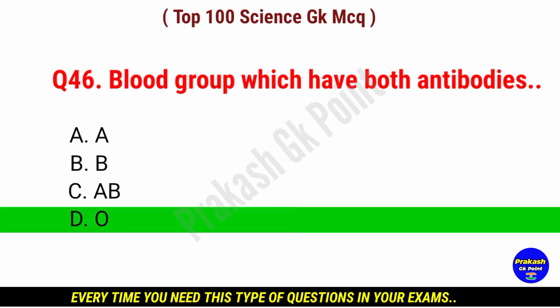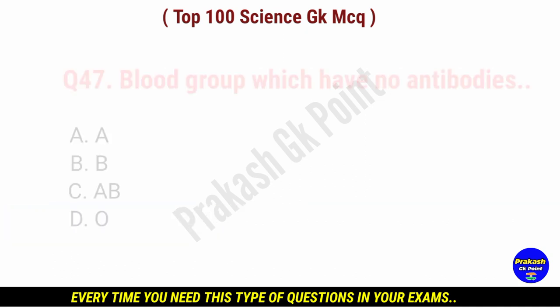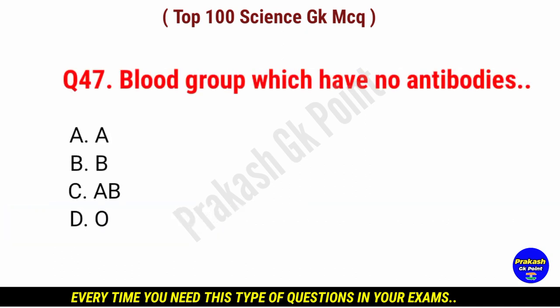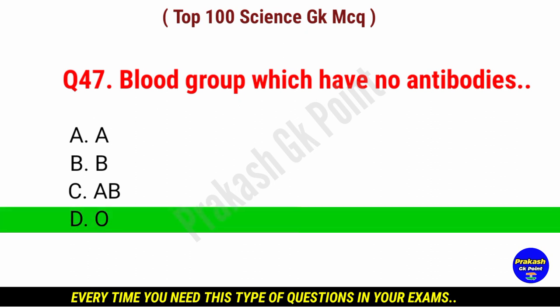Blood group which has both antibodies. Answer: option D, O positive blood group.